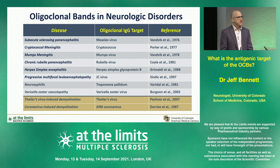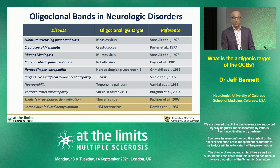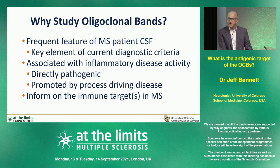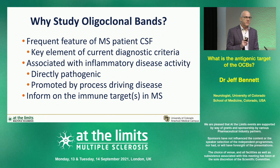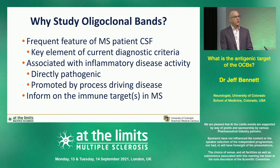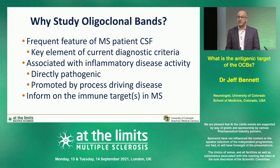Even more importantly, in other disorders where there are oligoclonal IgGs in the CNS — specifically in infectious causes, both in human and animal models — the target of the oligoclonal IgGs is the causative organism of the infection. So why study oligoclonal bands? Because oligoclonal bands are a frequent feature of MS patient CSF associated with disease activity, and are either directly pathogenic or driven by the process driving inflammatory pathogenesis — and they're going to inform us of the immune targets in this disorder. To put it simply, as the famous bank robber Willie Sutton said when asked why he robbed banks: 'That's where the money is.' Why study oligoclonal bands? Because that's where the money is.